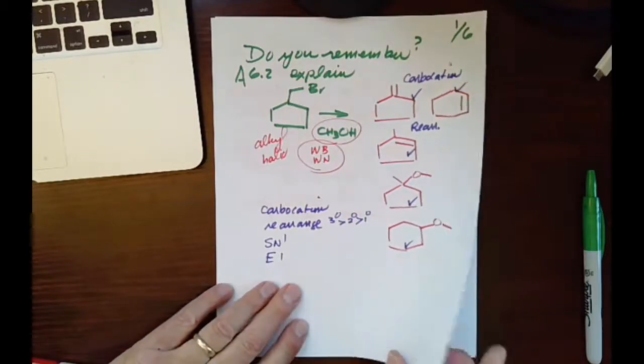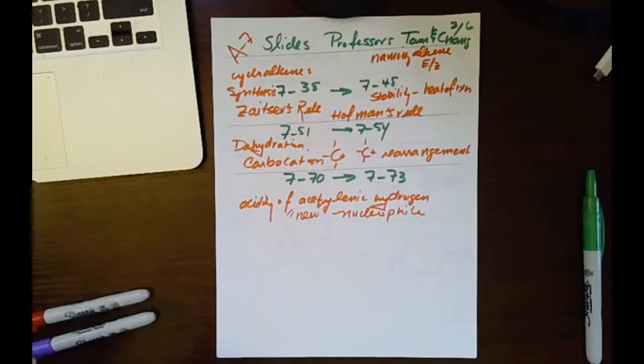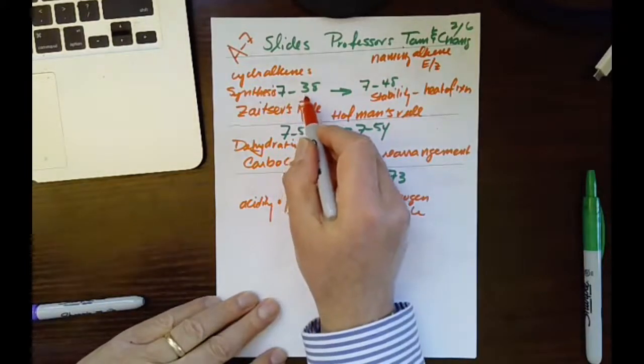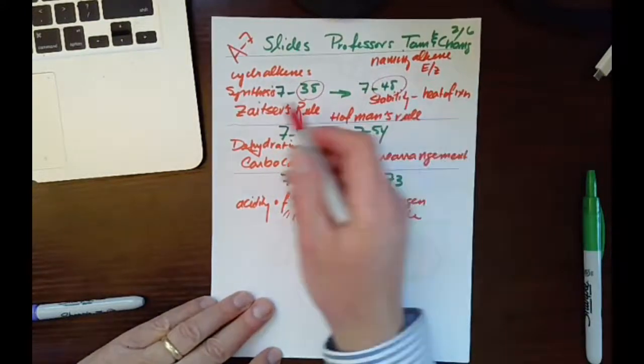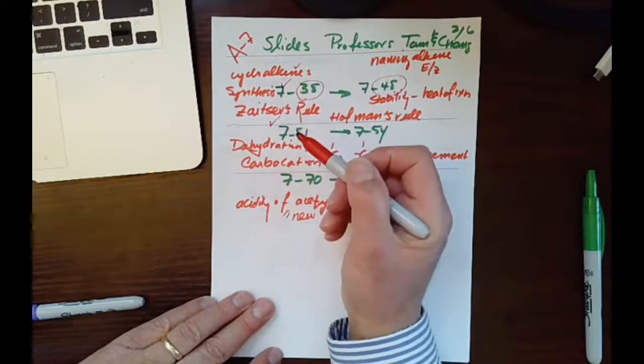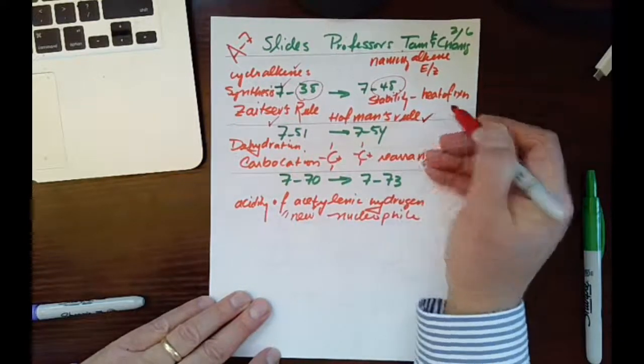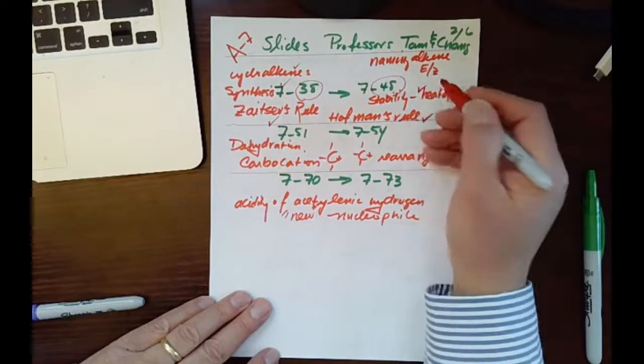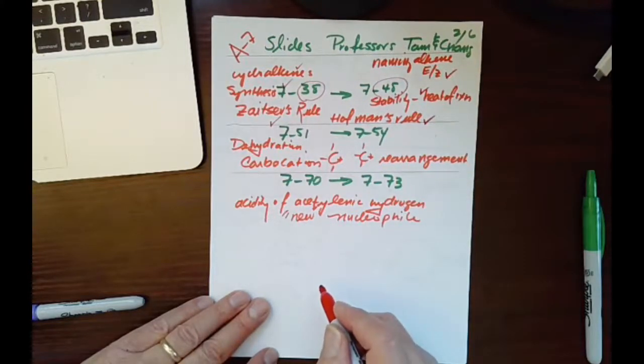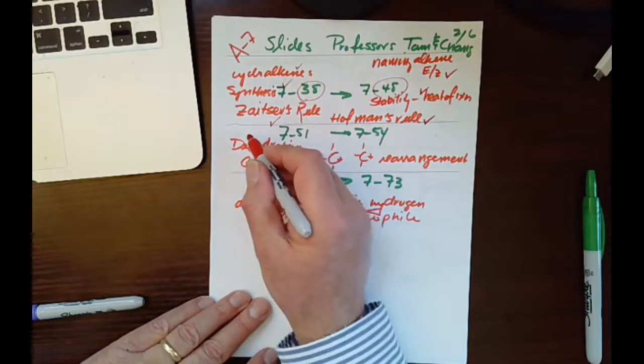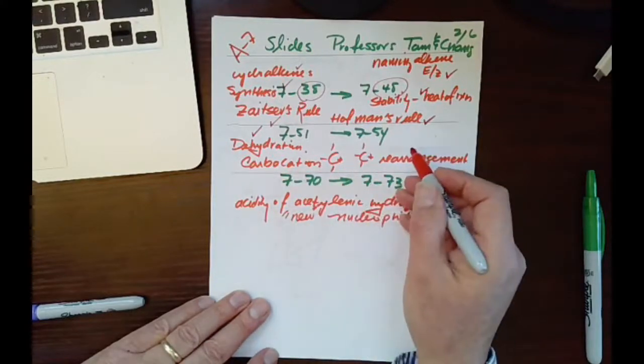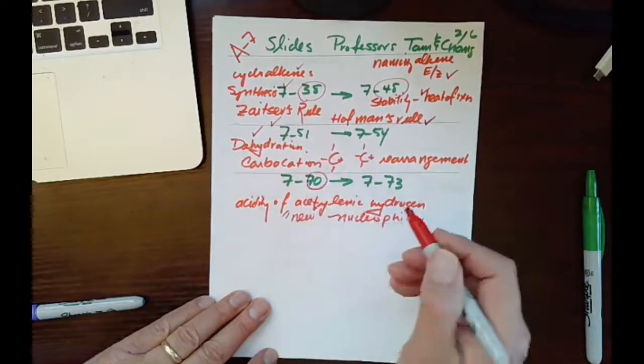Thank you for that. Then before Wednesday, if you have time, look at some of these slides that we have from the textbook. I was asking about slides 38 to 45. These are cycloalkenes, Zaitsev rule—do you remember that?—Hofmann rule, stability, naming alkanes. Then we talked about making the alkenes, so that was dehydration, and again carbocation rearrangement of the carbocation, slides 70 to 73.